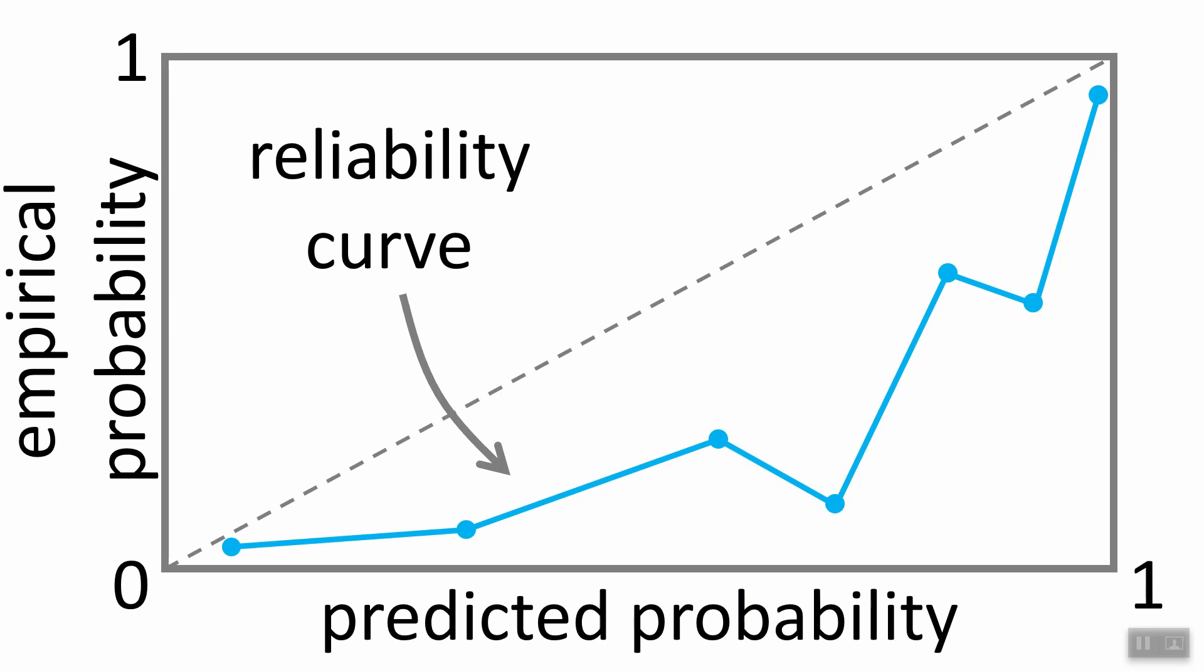So we need to perform some kind of probability calibration so that we can get these predicted probabilities to match up more closely with the ideal dashed gray line. And this, by the way, is called a reliability curve. It's so important that it gets its own name, which kind of blows my mind why I was never exposed to it. But there you go, called a reliability curve, or calibration curve sometimes.